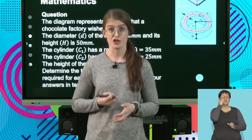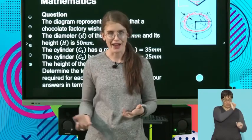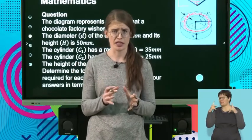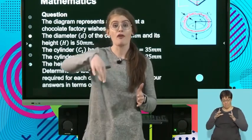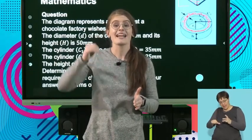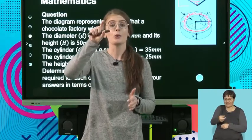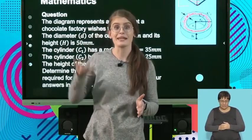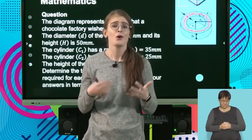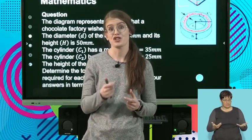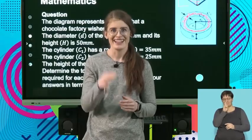I'm going to fill the cone with chocolate, so I'll first work out the volume of the cone. Then for the cylinders: I need the volume of the larger cylinder on the outside minus the volume of the smaller cylinder on the inside. The difference gives me the ring of chocolate between them. Note that this question asks us to leave answers in terms of pi, so I won't be working with decimals.